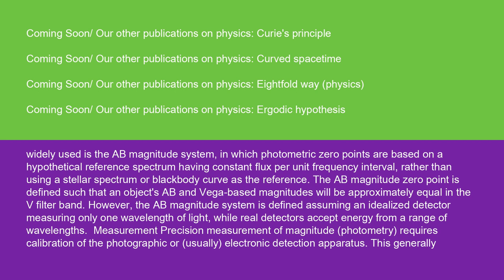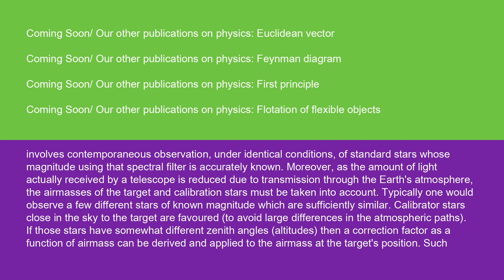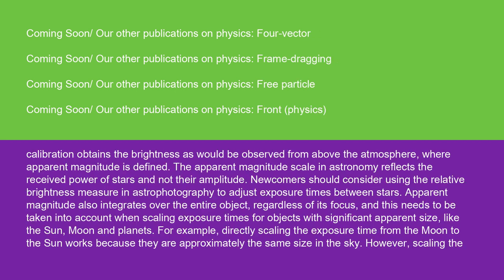Measurement precision measurement of magnitude photometry requires calibration of the photographic or (usually) electronic detection apparatus. This generally involves contemporaneous observation, under identical conditions, of standard stars whose magnitude using that spectral filter is accurately known. Moreover, as the amount of light actually received by a telescope is reduced due to transmission through the Earth's atmosphere, the air masses of the target and calibration stars must be taken into account. Typically, one would observe a few different stars of known magnitude which are sufficiently similar. Calibrator stars close in the sky to the target are favored to avoid large differences in the atmospheric paths. If those stars have somewhat different zenith angles (altitudes), then a correction factor as a function of air mass can be derived and applied to the air mass at the target's position. Such calibration obtains the brightness as would be observed from above the atmosphere, where apparent magnitude is defined.